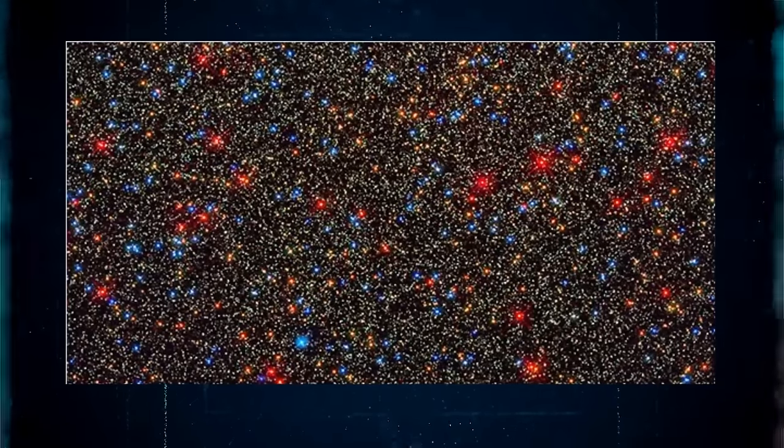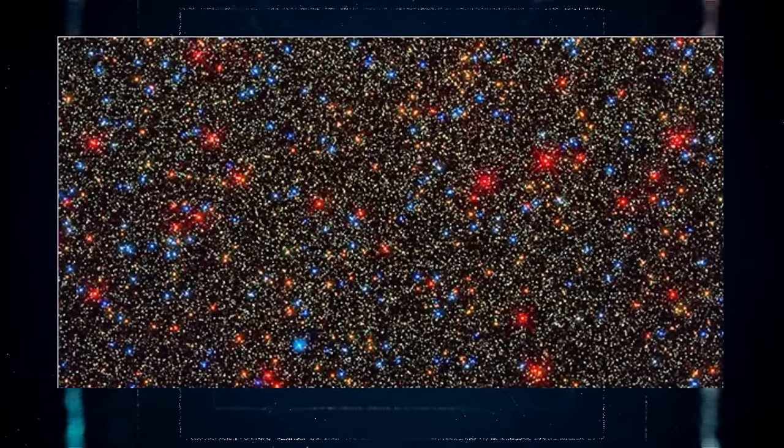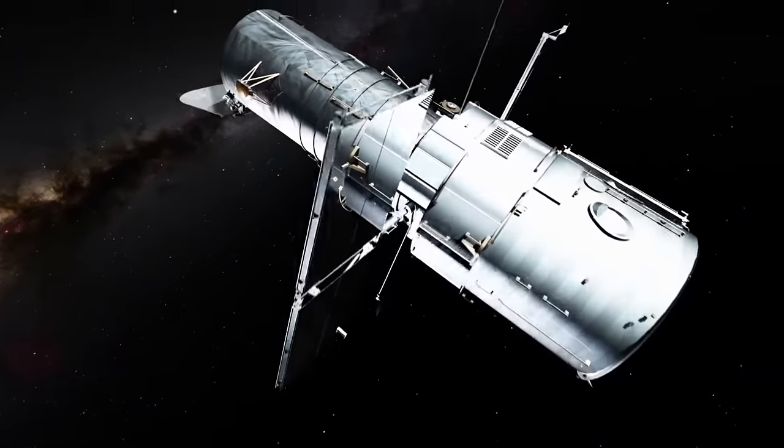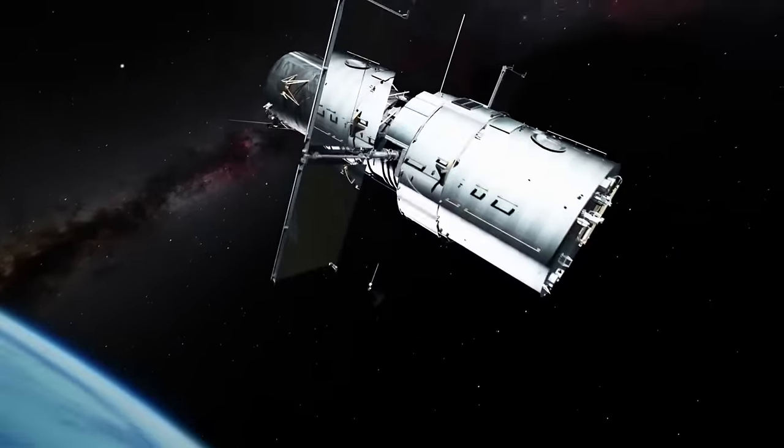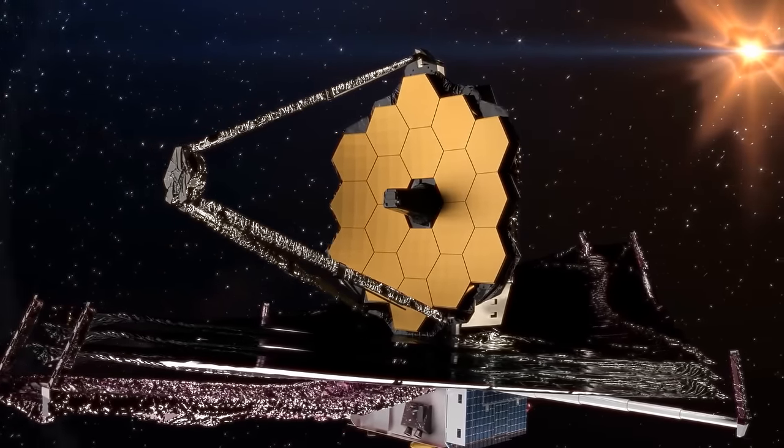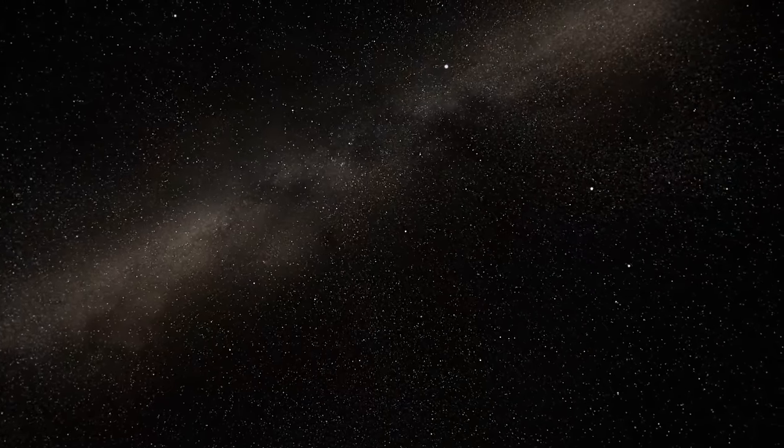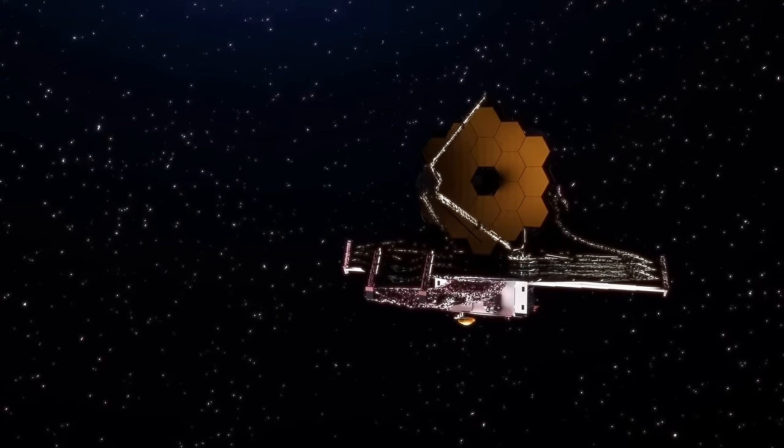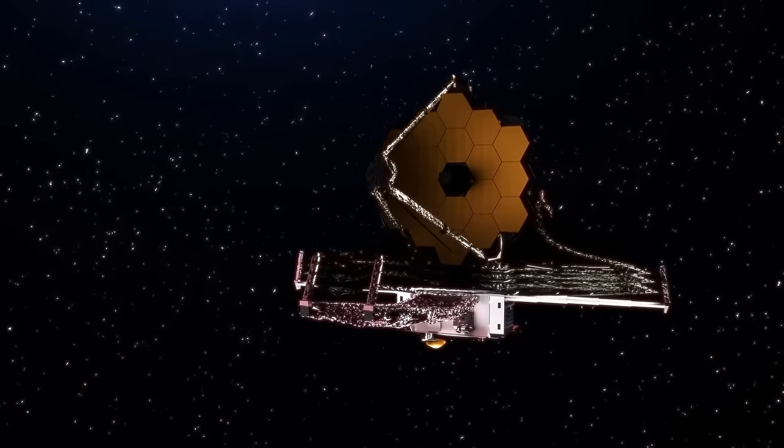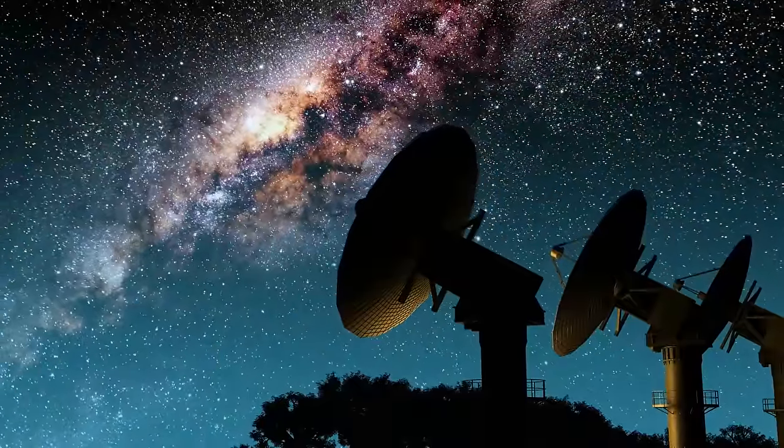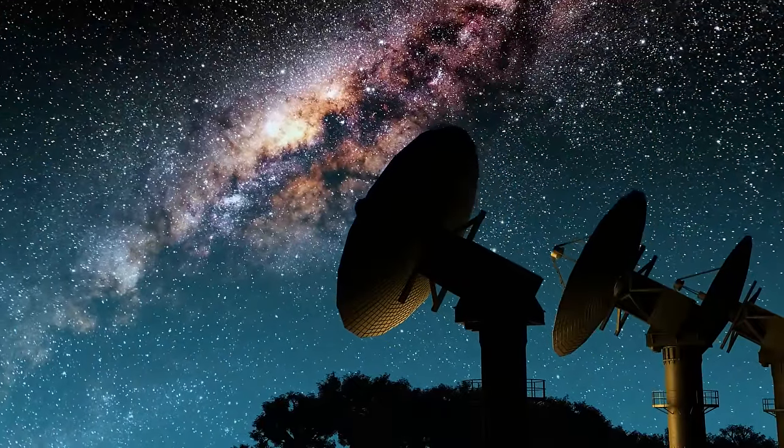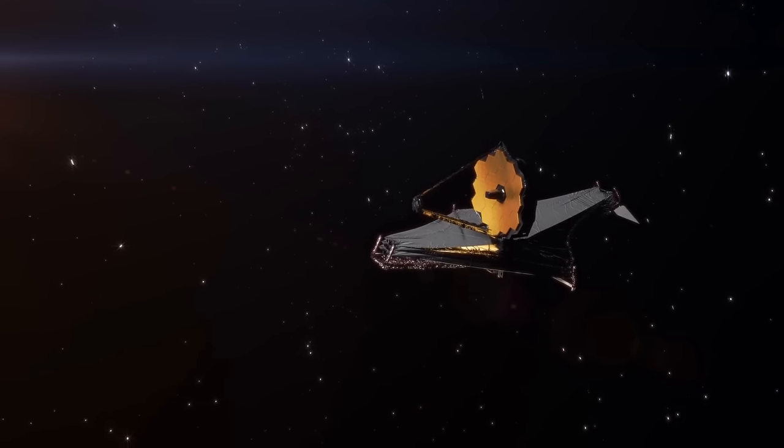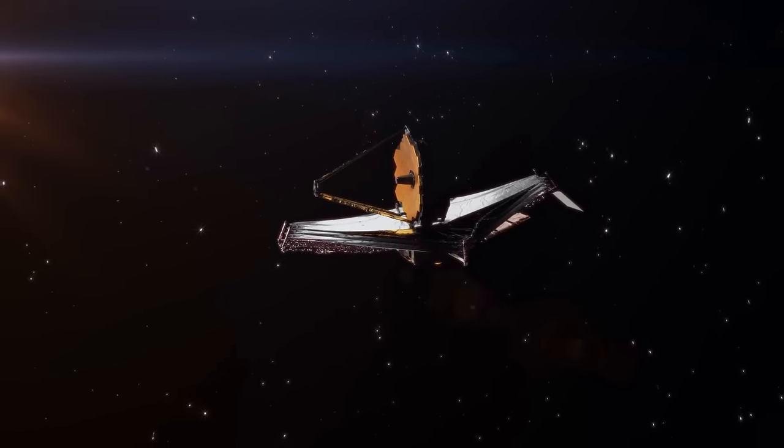However, a lot of folks pointed out that this detail actually makes the picture seem even less real. They say the light rays are a dead giveaway that the image isn't what it claims to be. And they have a point, especially when you compare this picture to actual photos from space telescopes like Hubble or the James Webb Space Telescope. In real space pictures, when you see bright things like stars, they often have these lines of light coming out from them, but they look a certain way because of the way the telescopes are built. These lines, or spikes of light, are known as diffraction spikes and they're a common thing in astronomy pictures, especially ones taken with telescopes that use mirrors to see far into space.